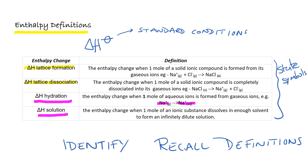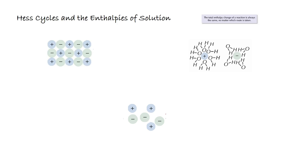So what we're going to move on and look at is how we can actually do some calculations with these. We're going to use Hess cycles to calculate enthalpies of solution as well as enthalpies of hydration and potentially lattice formation and lattice dissociation energies. Hess's law indicates that the total enthalpy change of a reaction is always the same no matter which route is taken, and we can use this to look at the enthalpy of solution.